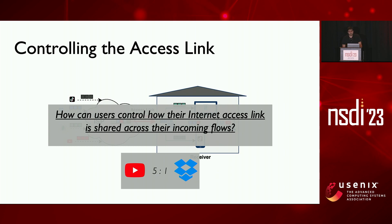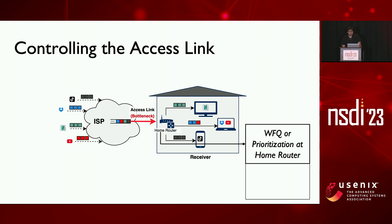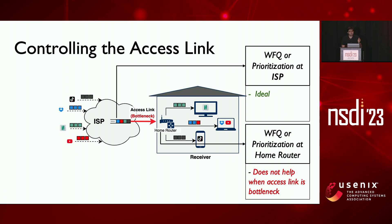This does seem like a very commonly occurring scenario that many of us have faced time and again. However, we were surprised to find there were no really good solutions to this. You might be thinking prioritization or weighted fair queuing at the home router could help, but this is only helpful when the link from home router to end devices is the bottleneck, and does not help when the access link from ISP is the bottleneck. Instead, what would have been effective is if ISP did weighted fair queuing or prioritization at the access link, as it can directly control what packets to put on the bottleneck link. However, ISPs do not know how users would like to divide the bottleneck bandwidth across their flows, and neither do they provide any mechanism for users to specify that.